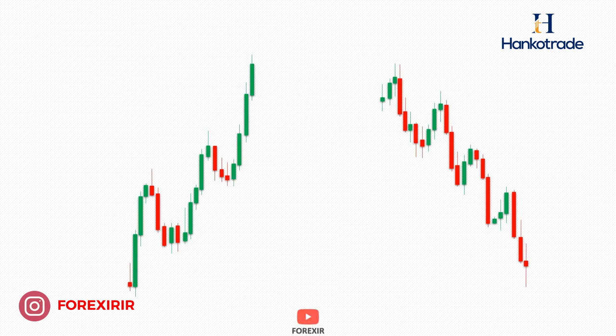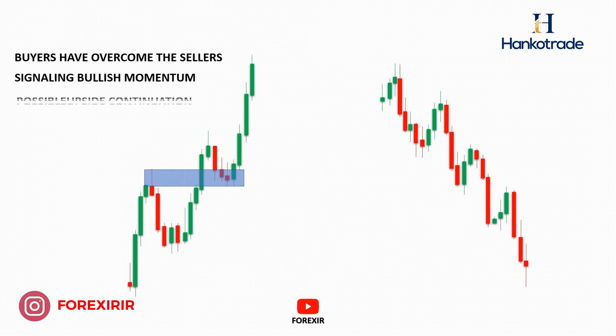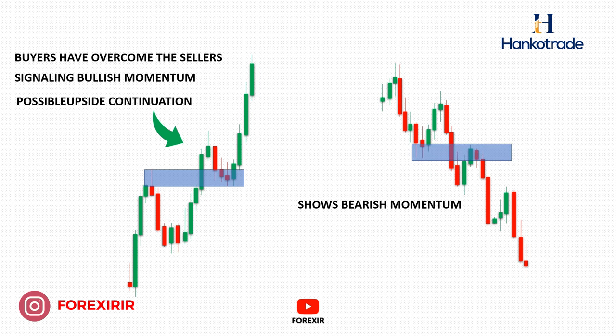Number two: identifying the market direction. When the price breaks through a resistance level, it signifies that buyers have successfully surpassed sellers, indicating bullish momentum and the potential for further upward movement. Similarly, a break below a support level indicates bearish momentum. Therefore, it's essential to align our trades with the prevailing trend. Identifying the direction is our initial step when analyzing candlestick charts.